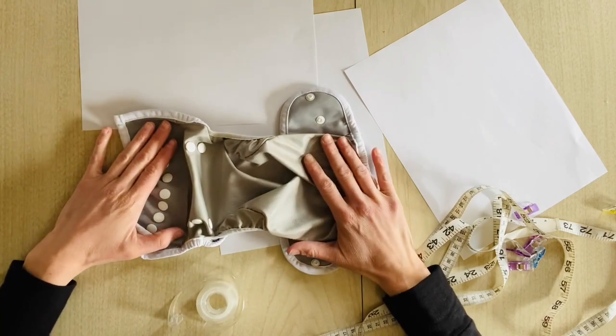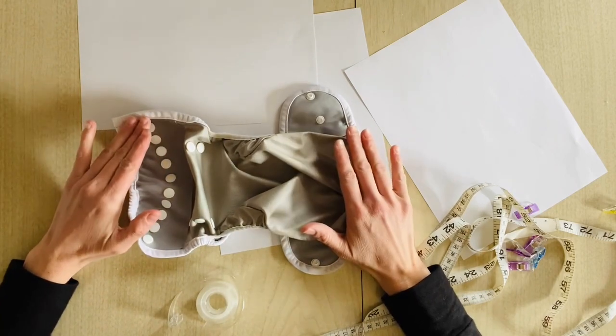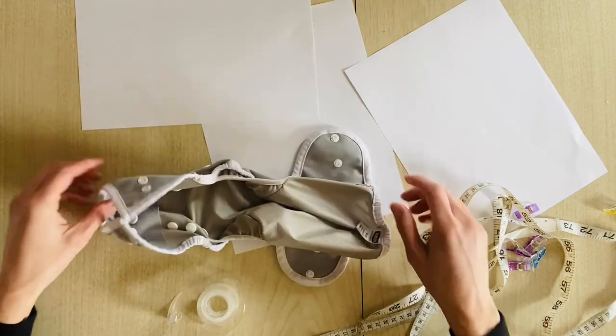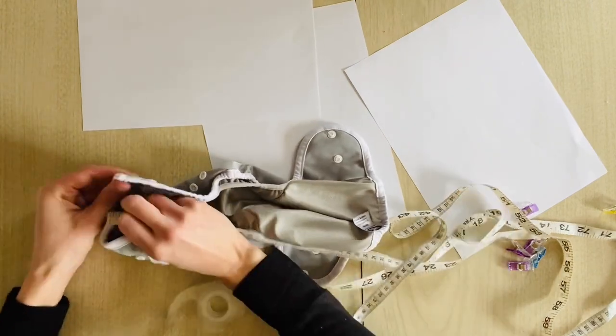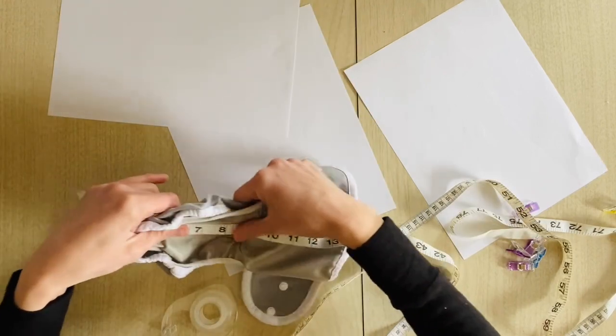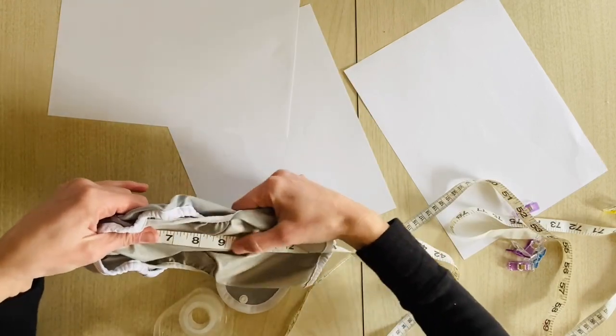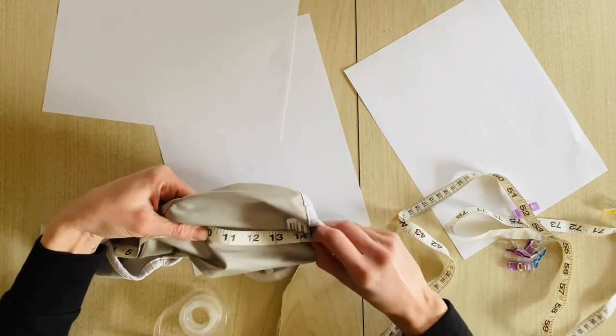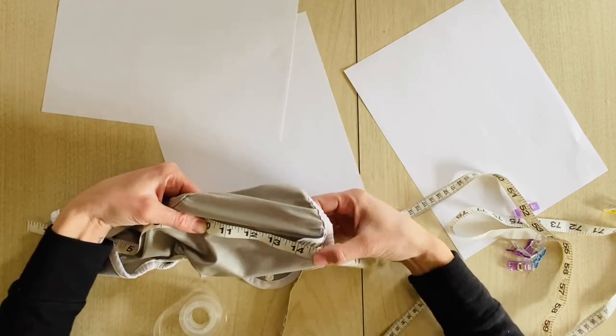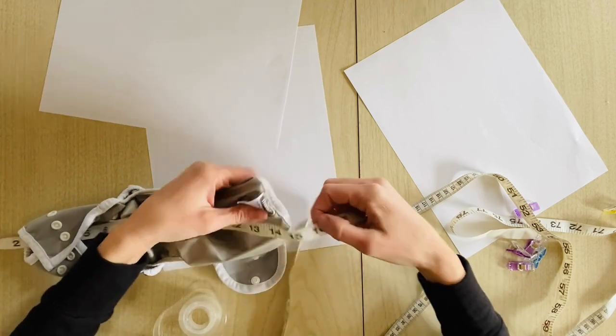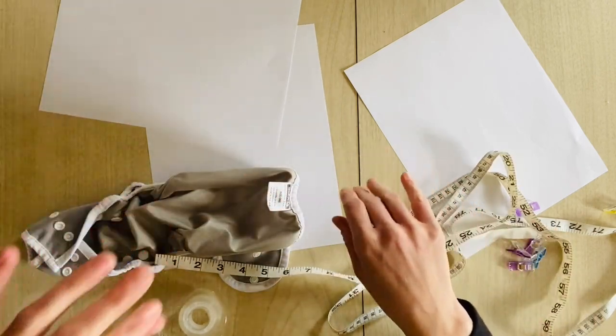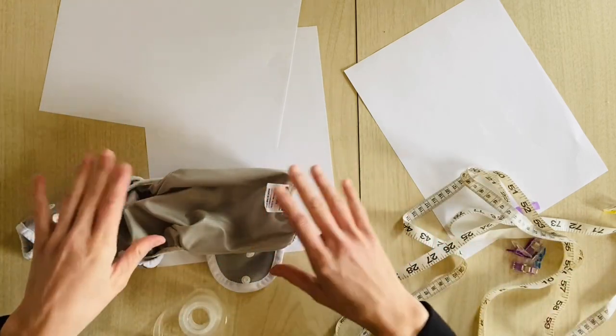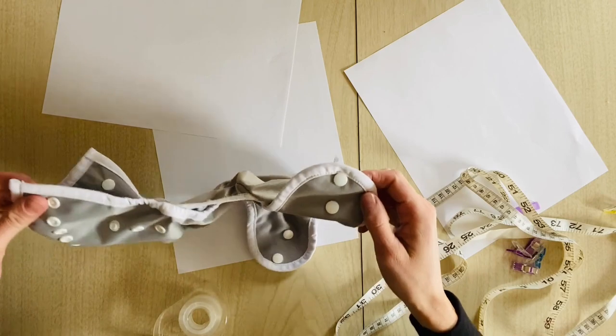So the first thing that you're going to do is kind of get a feel for the dimensions of the product. First we're going to see basically how long it is. I'm just going to measure that. So this measurement is the rise and this one is about 15 and a half. Remember, it doesn't have to be perfect. We're just going for the general shape and size of a product.